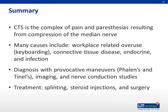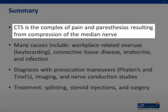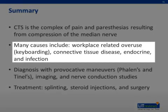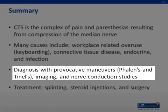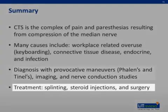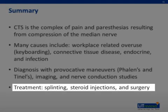In conclusion, the key points of this lecture include the following. Carpal tunnel syndrome is the complex of pain and paresthesia resulting from direct or indirect compression of the median nerve as it passes through the carpal tunnel of the wrist. CTS has many potential causes, including overuse in the workplace, connective tissue disease, and endocrine and infectious etiologies. CTS is diagnosed clinically with a careful history — symptoms are usually present in a median nerve distribution — and provocative maneuvers on physical exam. The diagnosis is often confirmed with ultrasound, MRI, and/or nerve conduction studies. Treatment should be approached with attempts at conservative management with splinting and local steroids, with definitive surgical management reserved for progressive or refractory disease.